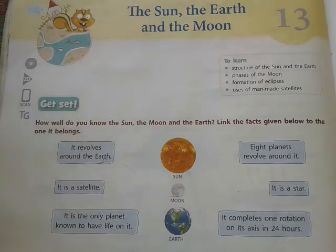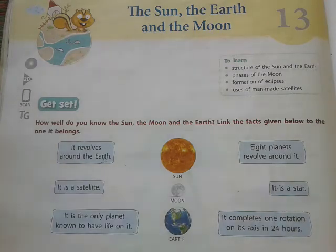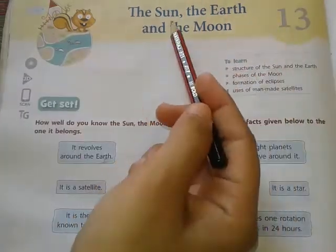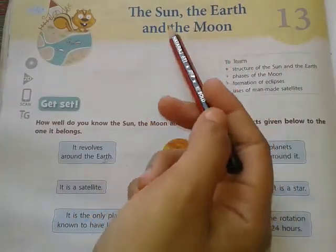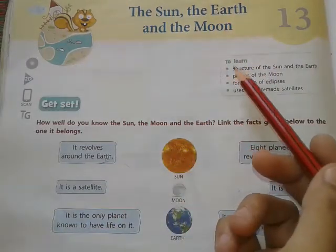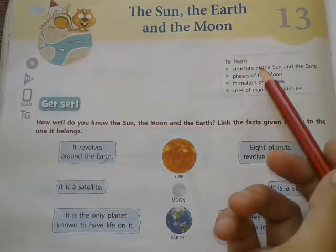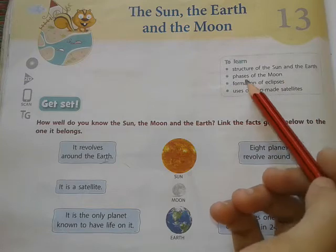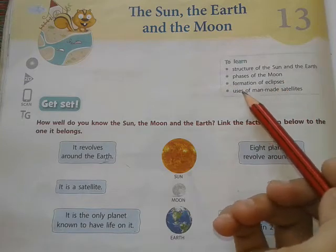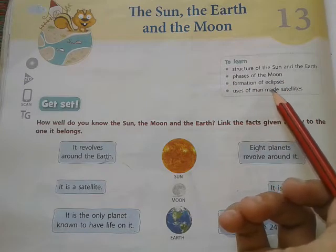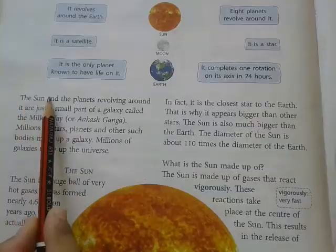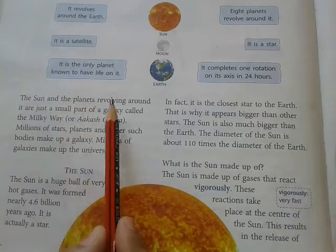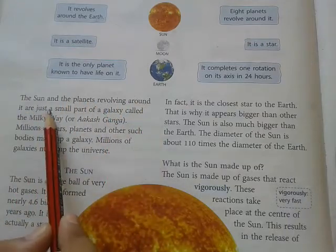Hello students, welcome to our general study class. Today we will start a new chapter — Chapter 13: The Sun, the Earth, and the Moon. In this chapter we will learn about the structure of the Sun and the Earth, phases of the Moon, formation of eclipses, and uses of man-made satellites.